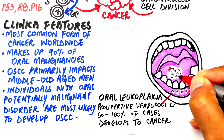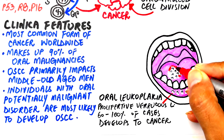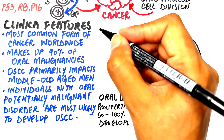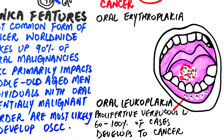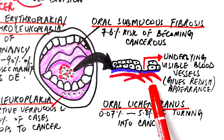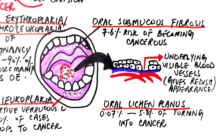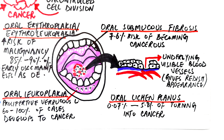Sometimes areas of leukoplakia may develop red patches, suggesting severe DNA damage and cellular atrophy, which makes the underlying blood vessels more visible, giving a reddish appearance. At this stage the lesion is called erythroleukoplakia, showing both red and white areas. Over time it may progress into a fully red lesion known as erythroplakia, which carries a much higher risk of malignancy. About half of oral erythroplakia cases progress into dysplasia, carcinoma in situ, or invasive cancer, making it one of the most dangerous precancerous conditions in the mouth.